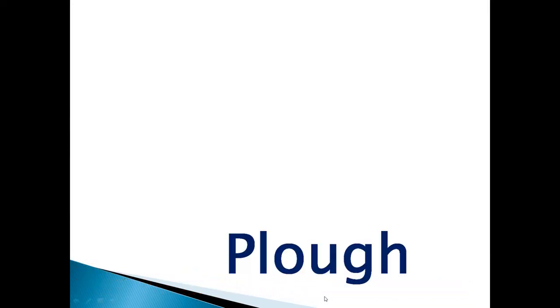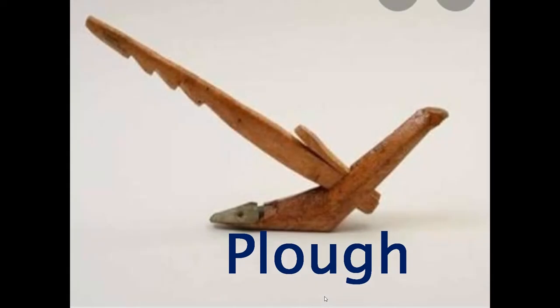Let us move on to the next agricultural implements. Let us learn more about some of the important agricultural implements used in the first step — preparation of soil. Can you identify this? Yes, this is the plow, one of the important agricultural implements. Before sowing the seeds, it is necessary to break soil clumps to get better results. This is done by using various tools. The main tools used here are plow, hoe, and the cultivator.